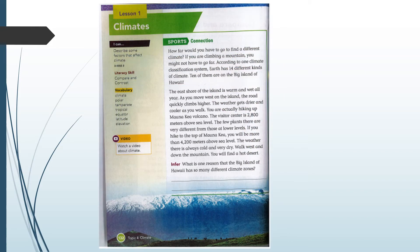Here on page 132 we start our lesson on climates. You can see the learning target off to the side — it says: I can describe some factors that affect climate. Think about that as I read. You also have some vocabulary words to look for: climate, polar, temperate, tropical, equator, latitude, and elevation. When you see those words written in bold print, pay really close attention because those are the words you'll have to define on your assignment in Schoology, or if you're a hybrid student, on your paper copy.